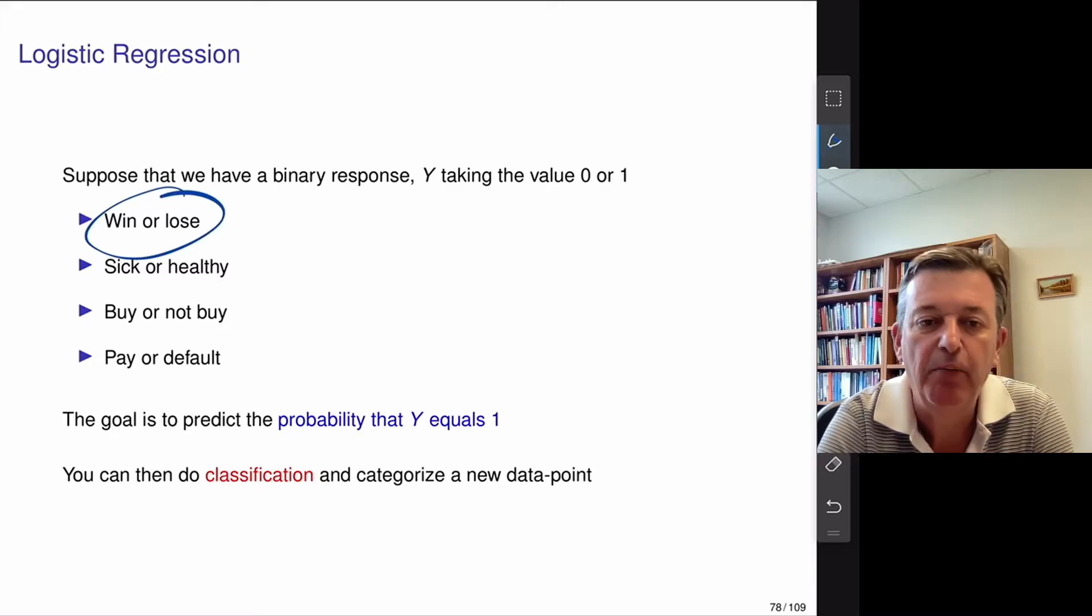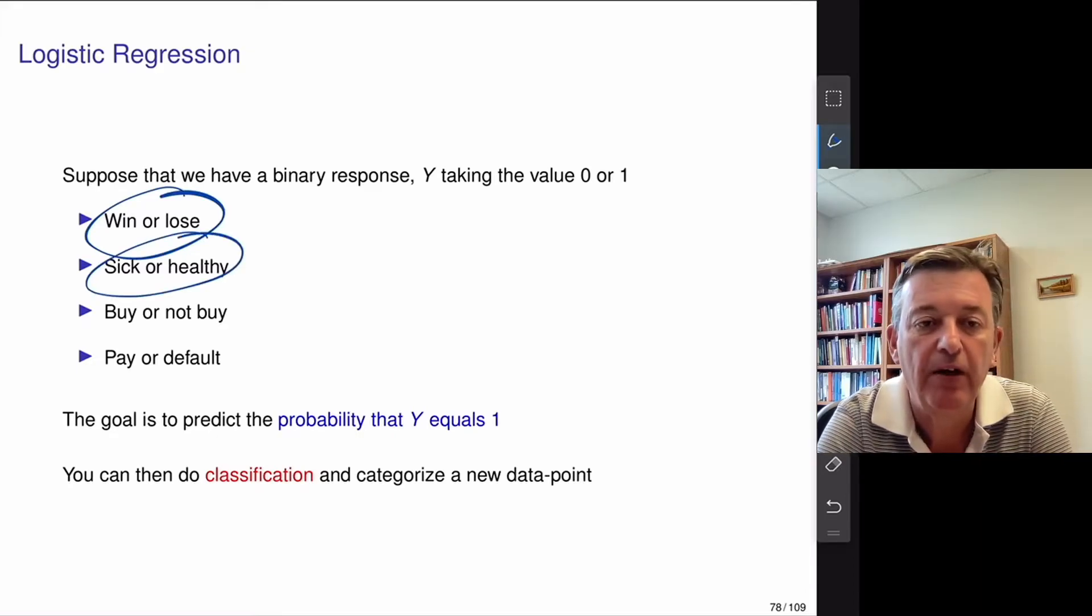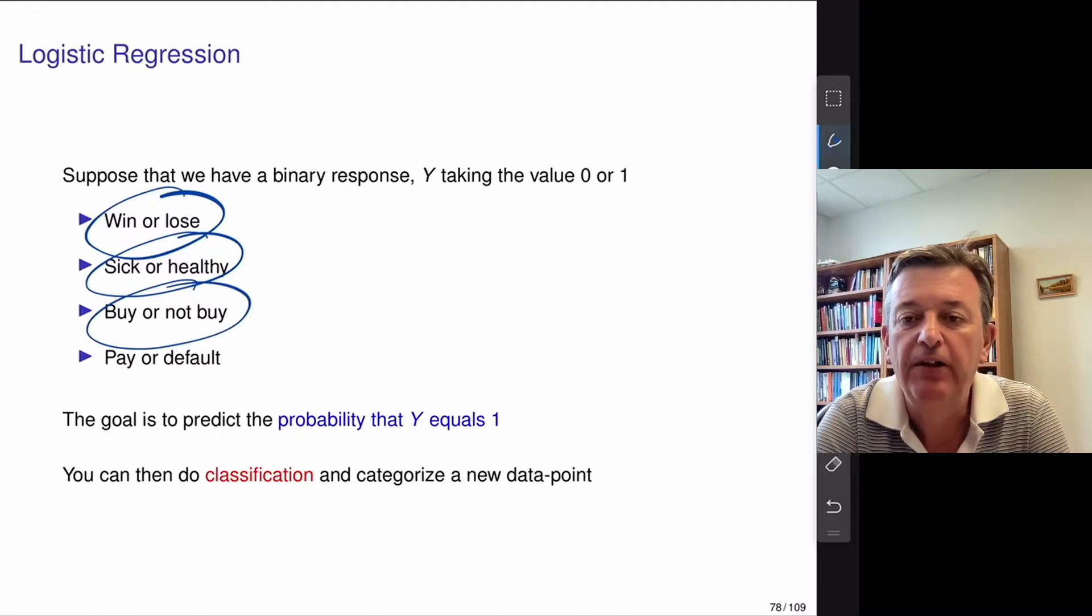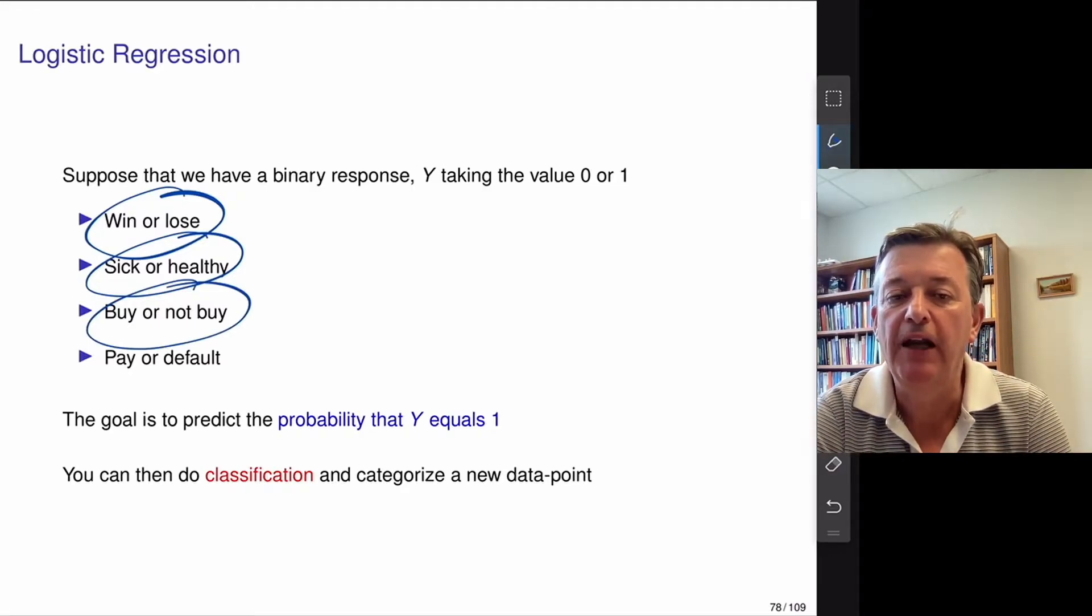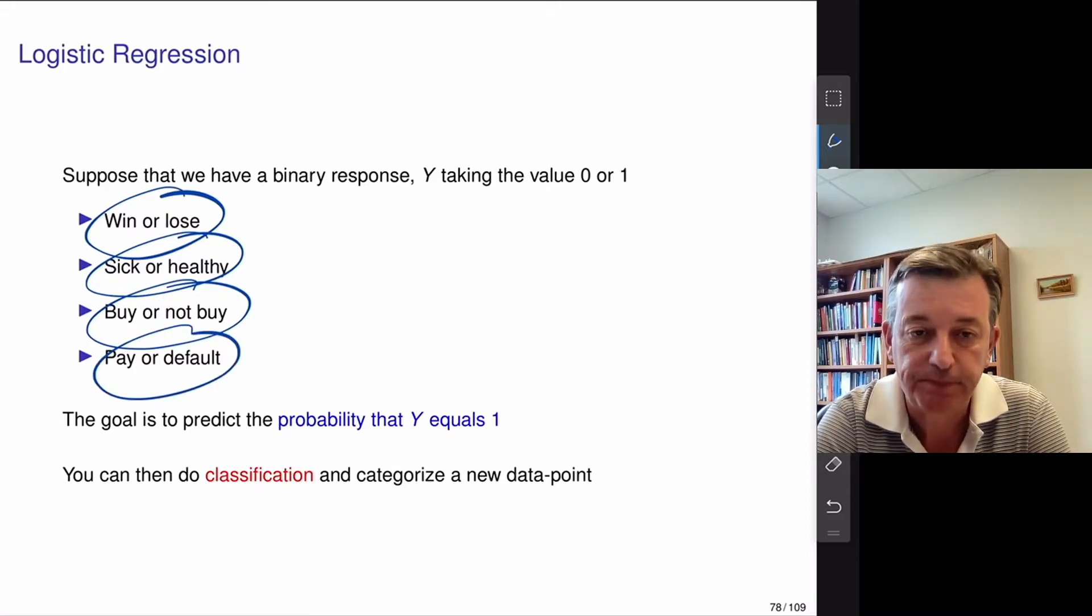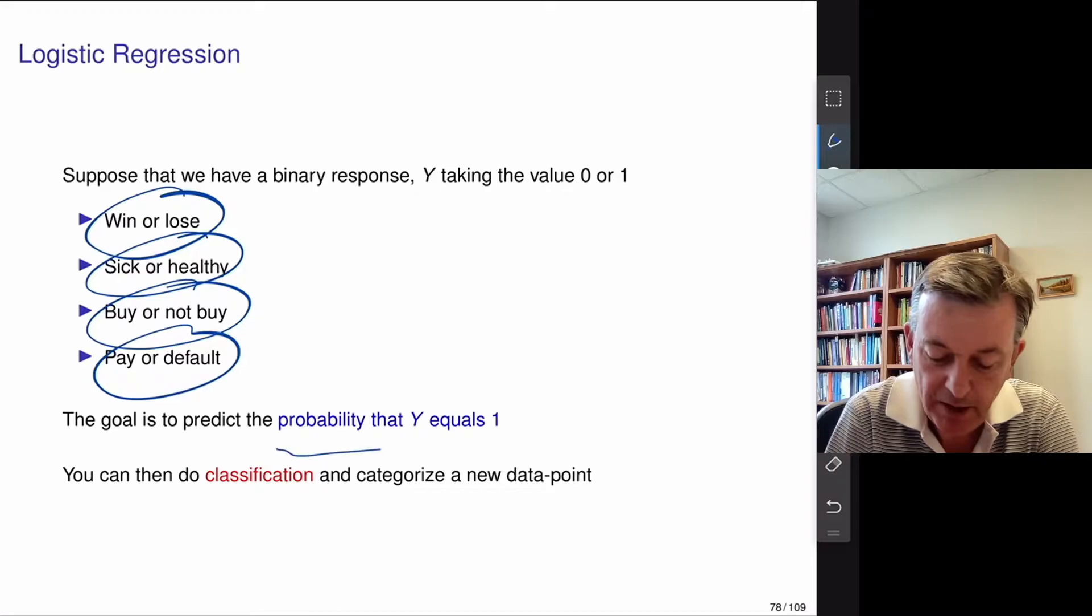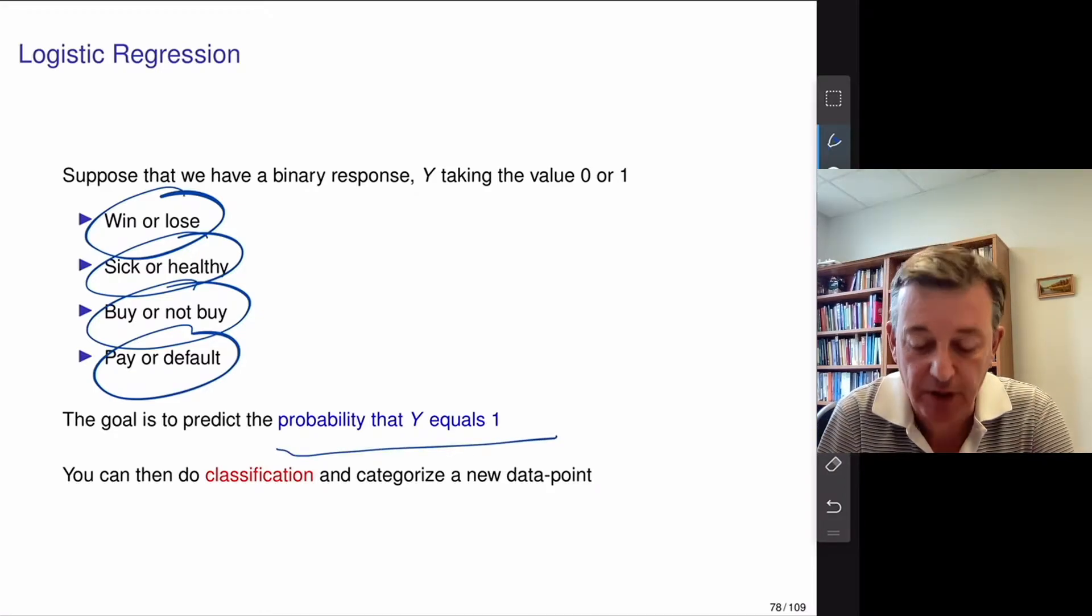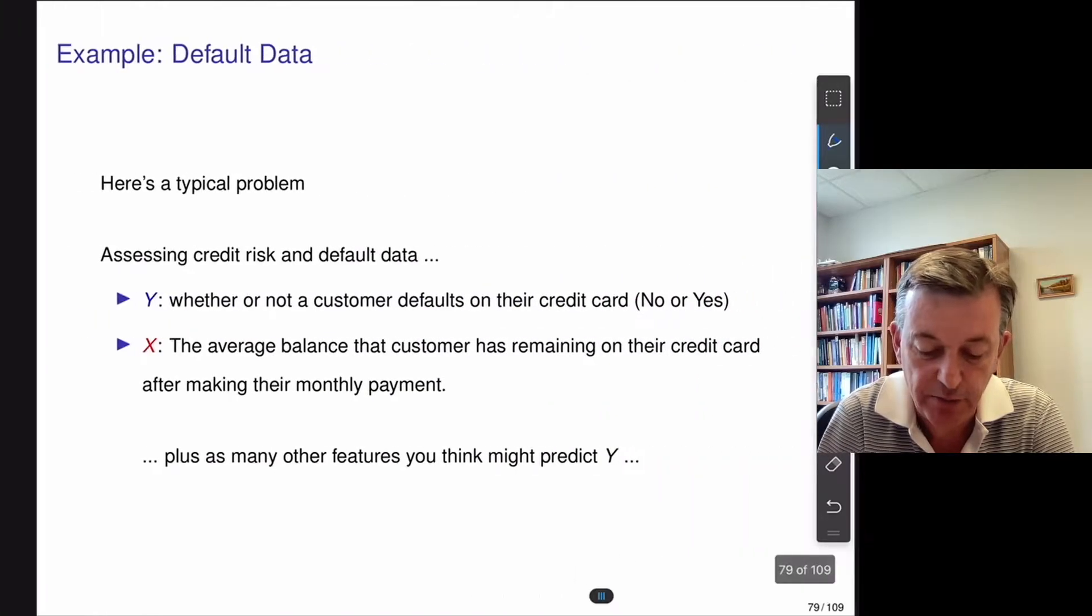There's endless problems, millions of problems where you want to do logistic regression: sports betting, win or lose problems, lots of healthcare ones, decisions to buy or not to buy or to click through on a Google ad or not, lots of credit risk problems too. And again the goal is quite simple: let's try and predict the probability that y equals 1 given a certain combination of our x variables, the so-called classification problem.